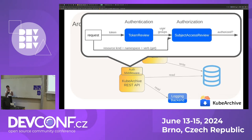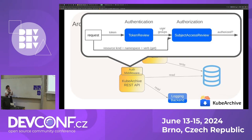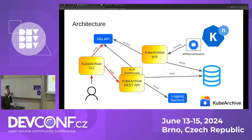We want to cache this because it's likely that a user is going to be querying several resources in a short amount of time from the same kind. And that's it for the middleware.